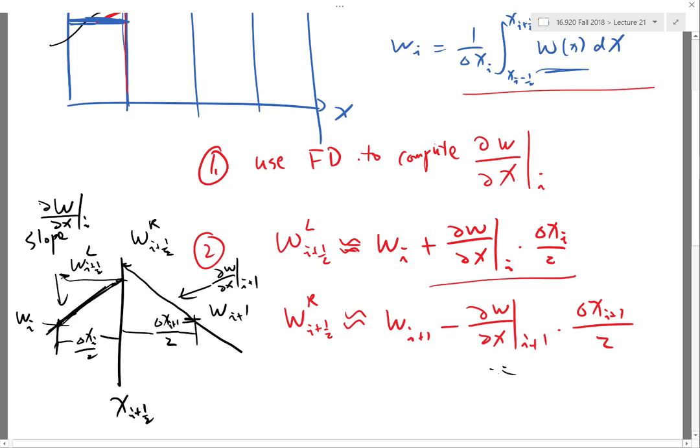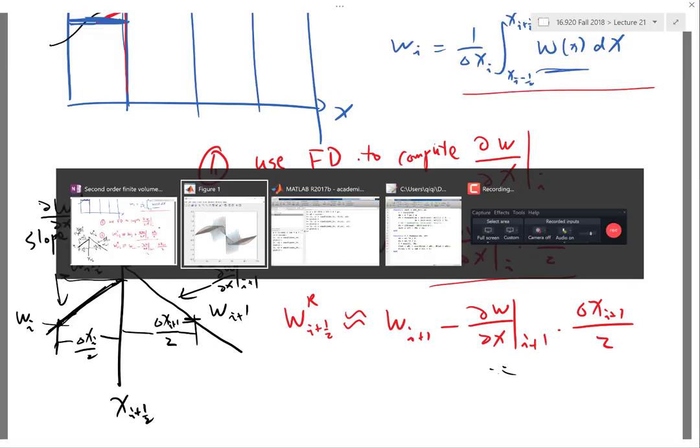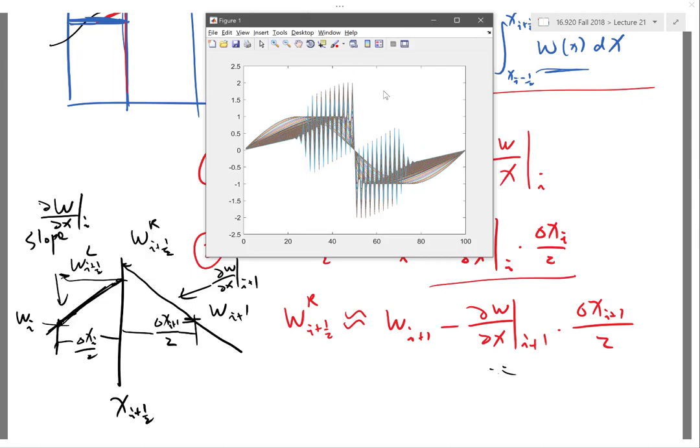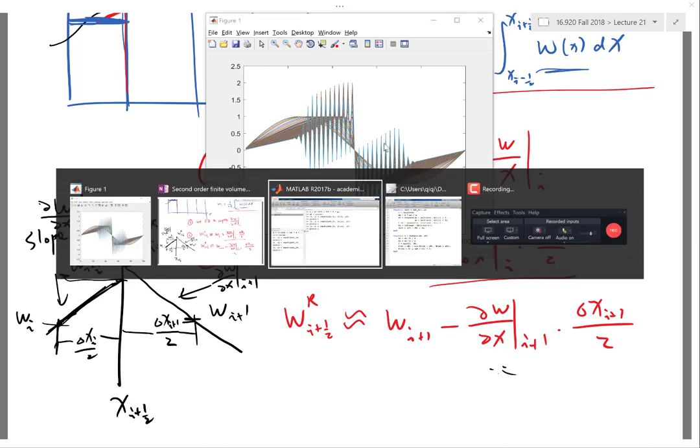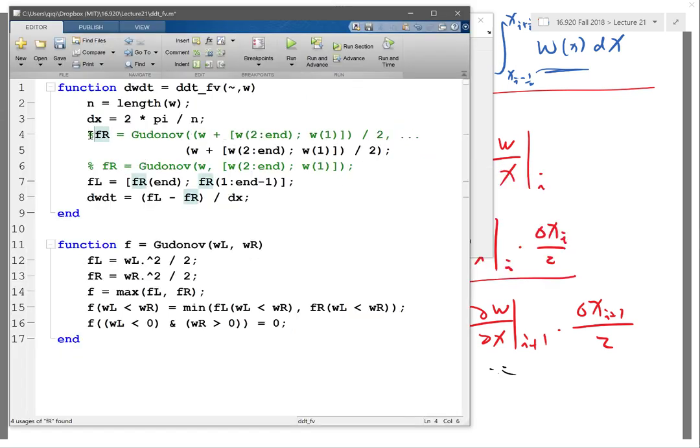So now this should provide us a better scheme. It's going to provide us a second order scheme and it should behave a lot better than this one. So let's keep this picture over here and code up our second order approximation.